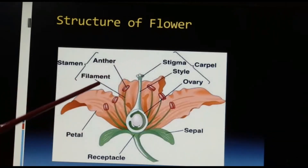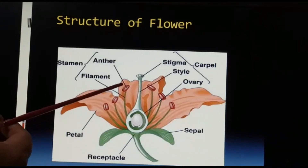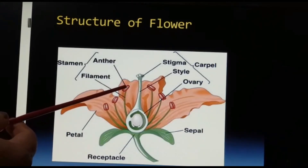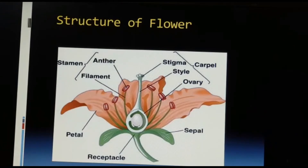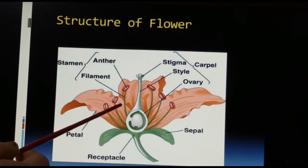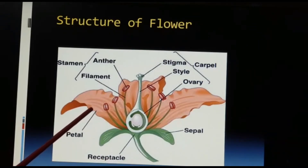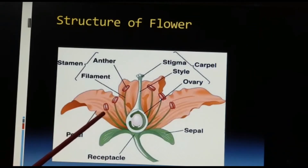The anther is responsible for the formation of the pollen grains. The filaments are the thin thread-like structures which are attached to the anther and they keep the anther in its place.